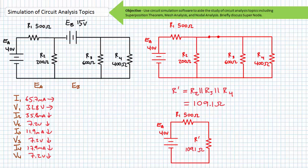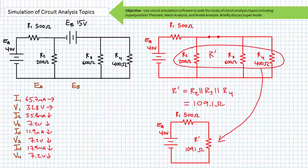From the perspective of just the EA source, EB is removed by replacing it with a short circuit. This places R2, R3, and R4 perfectly in parallel with one another. The parallel simplification is called R prime. R prime is in series with R1. The voltage divider rule can be used to solve for the voltage drop across R prime to be 7.2 volts, positive to negative, top to bottom.